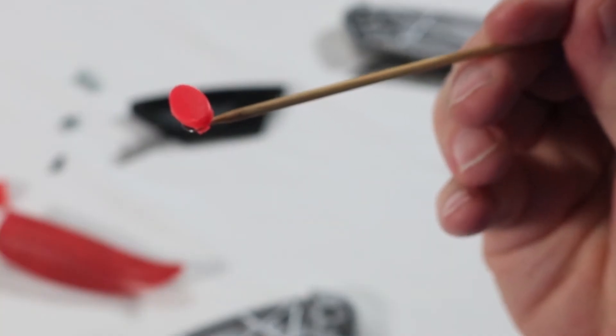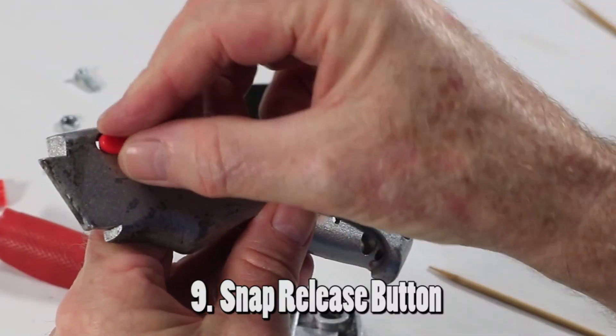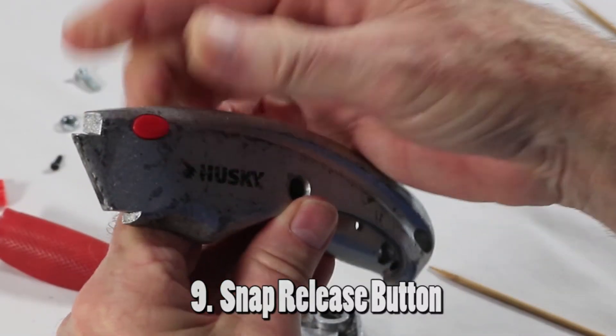Notice this button has a thin side and a thick side. The thin side goes to the front of the knife. Get the other half handle and snap the blade release button.